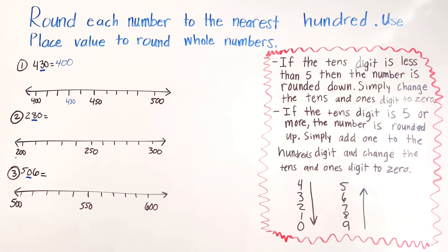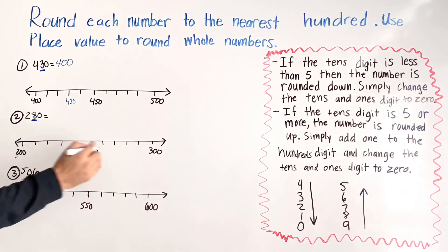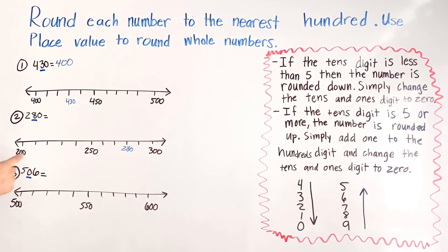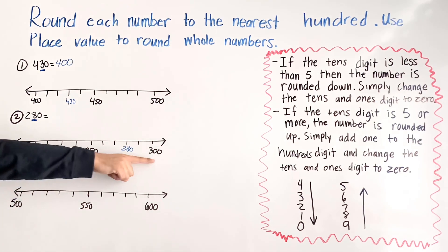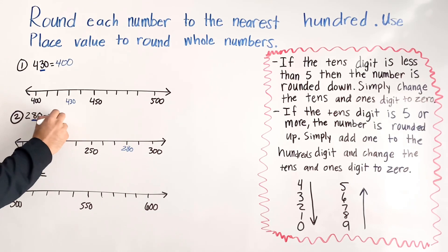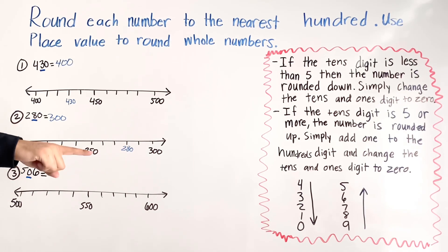For number two we have 280. On the number line we have 250, 260, 270, 280. Are we closer to 200 or closer to 300? We're closer to 300. Also, without using the number line, we look at the tens digit, which is eight — and our arrow shows eight means rounding up, so we round to 300.